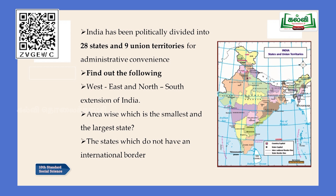So far we have learned the location and size of India. Now find out the following from your textbook: first, what is the west to east and north to south extension of India? Second, area-wise, which is the smallest state in India and the largest state in India? Children, take a notebook and find these answers.